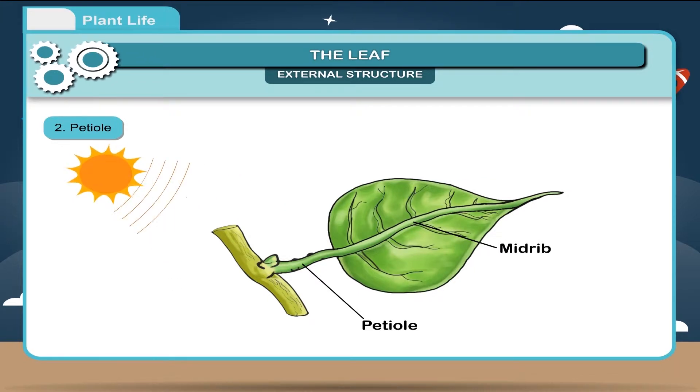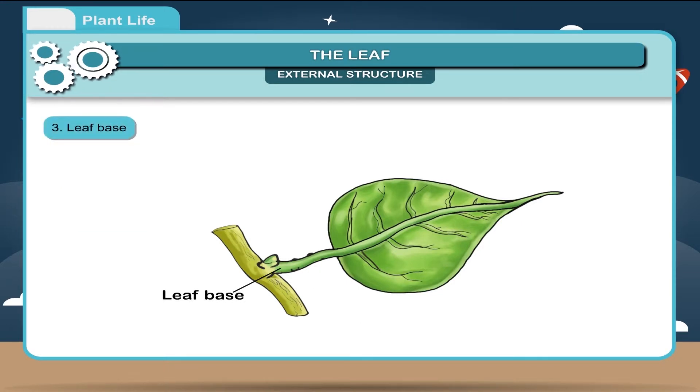Leaves having petioles are called petiolate and the leaves without petioles are called sessile. Leaf base. Leaf base is a basal part of leaf through which leaf is attached to the stem.